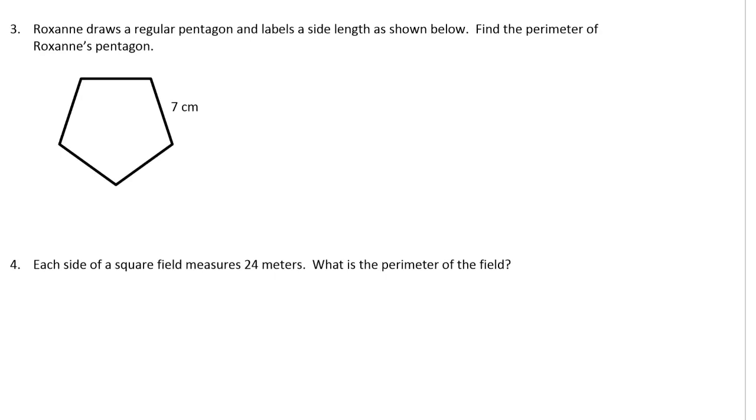Roxanne draws a regular pentagon and labels a side length as shown below. Find the perimeter of Roxanne's pentagon. So it's a regular pentagon so all the sides are 7 cm.